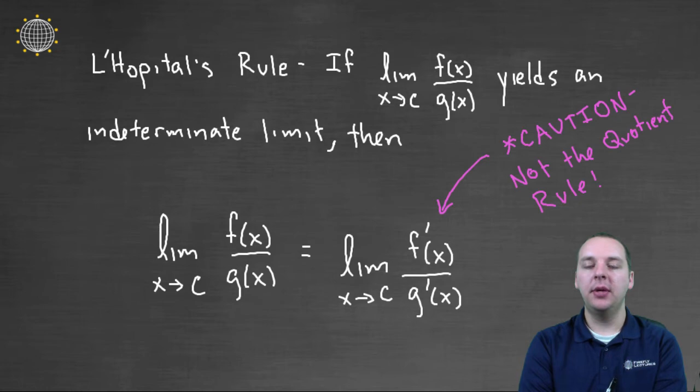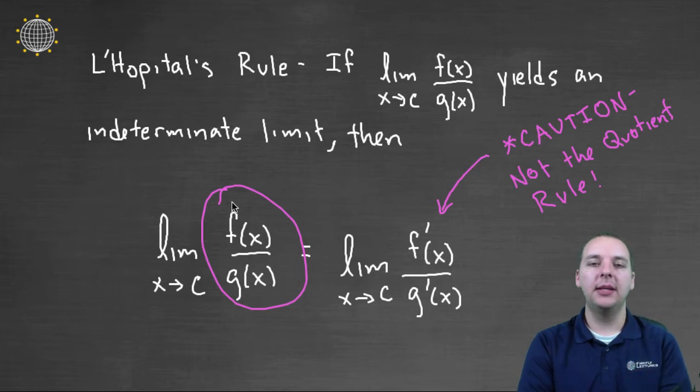Before we try an example, let me give you one caution. Sometimes students confuse L'Hopital's rule with the quotient rule, probably because it involves a rational expression. This is not the quotient rule—I'm not taking low d-high minus high d-low. I'm simply differentiating the numerator and dividing by the derivative of the denominator. It's not the quotient rule, so keep that in mind.